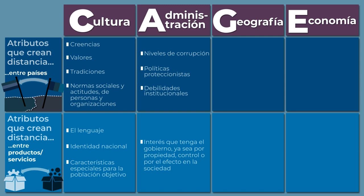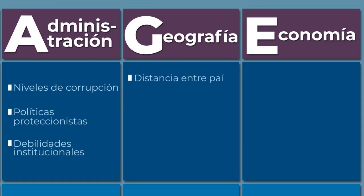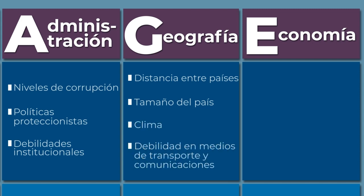El tercer punto del análisis CAGE es la geografía, en donde la empresa decide si hacer exportaciones o mejor inversión extranjera directa. Eso depende del compromiso que tenga la empresa frente a su país destino. La decisión dependerá, entre otros, de los aspectos de transporte y comunicaciones. Aunque la distancia entre dos países se ha reducido debido a la facilidad del transporte y de las tecnologías de la información y las comunicaciones, también debemos tener en cuenta la distancia entre países, el tamaño del país, el clima y las debilidades en el transporte y comunicaciones.